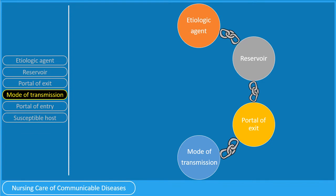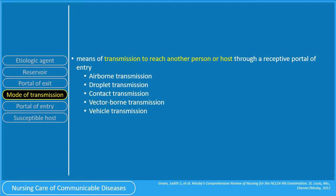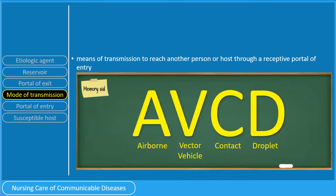For the next link, we have the mode of transmission. The mode of transmission is the means by which the agent reaches another person or host through a receptive portal of entry. There are different classifications for modes of transmission: airborne transmission, droplet transmission, contact transmission, vector-borne transmission, or vehicle transmission — remembered as AVCD for airborne, vector, vehicle, contact, and droplet.